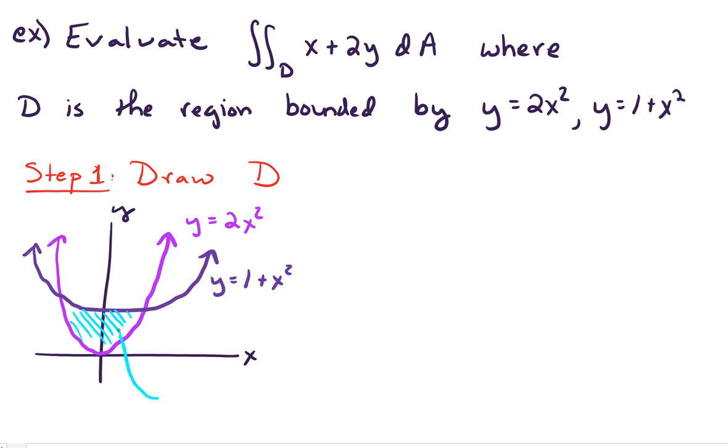And so our region D is this region between these two parabolas. Okay, so there is region D. And again, it's good to think about an arrow or a little person standing in here and think about what is the roof or the upper bound for them and what's their lower bound.